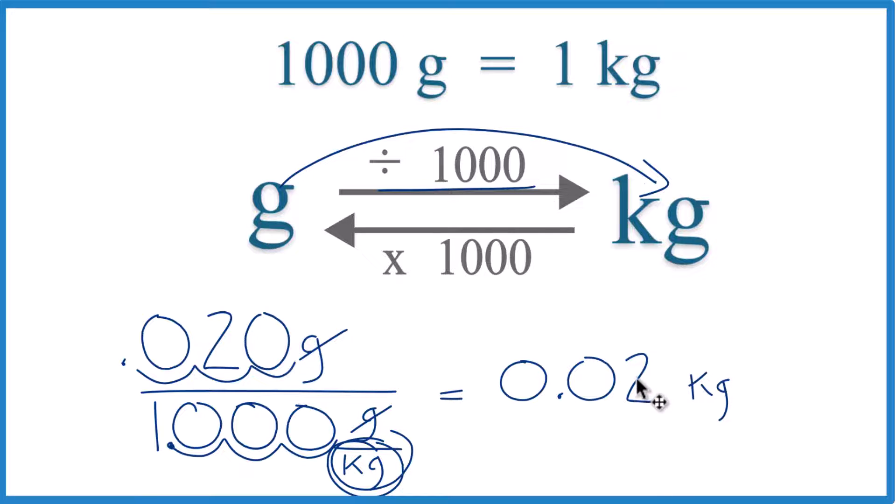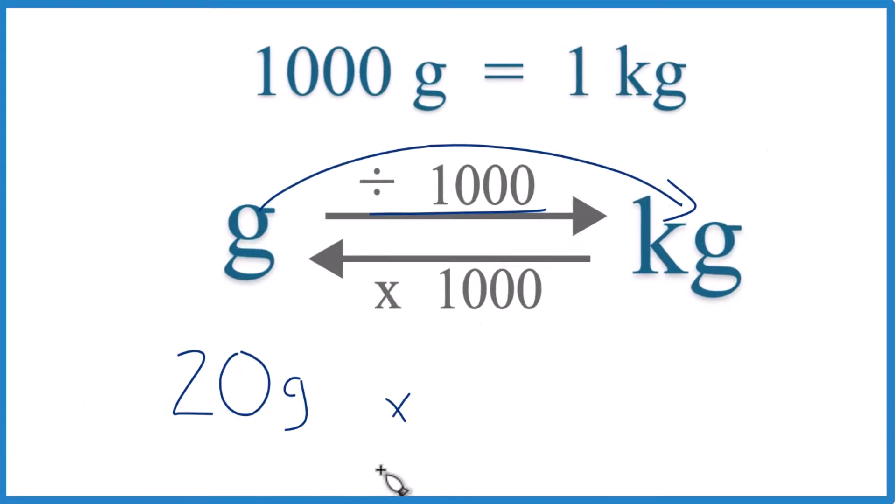Sometimes teachers want you to multiply by a conversion factor. Let me show you how to do that. It's the same basic idea. So we have 20 grams and we want to multiply it by a conversion factor with grams on the bottom so they cancel out. So here's our conversion factor. And you can see it's 1 kilogram per 1,000 grams, just like our conversion factor up here.